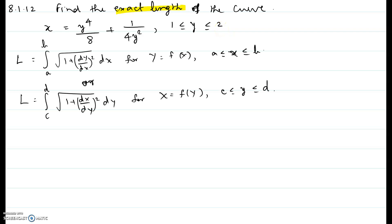We have two formulas for finding the length of the curve. The first is the integral from a to b of the square root of 1 plus (dy/dx) squared dx, when y is a function of x and x lies between a and b. Or you can also use the integral from c to d of the square root of 1 plus (dx/dy) squared dy, when x is given as a function of y and y lies between c and d.